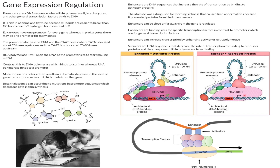Now let's move on to talking about enhancers. Enhancers are DNA sequences that increase the rate of transcription by binding to activator proteins. Enhancers can be close or far away from the gene that they regulate. If they are far away, the DNA — which is a 3D structure — can bend in order to bring the enhancer close by to the promoter. Enhancers are binding sites for specific transcription factors, in contrast to promoters which are binding sites for general transcription factors.